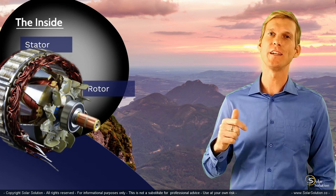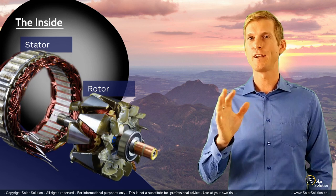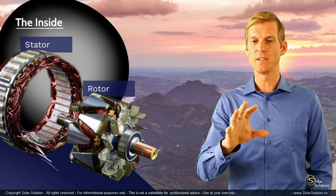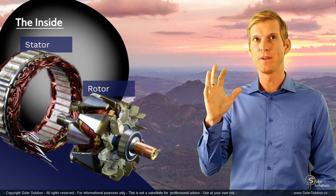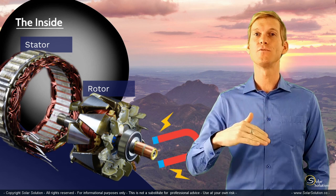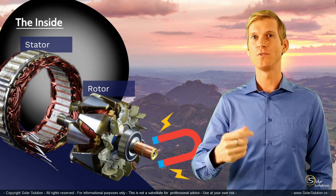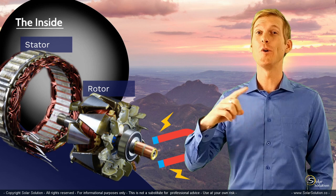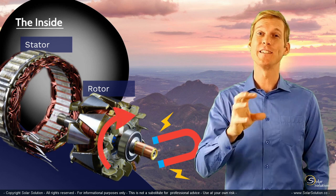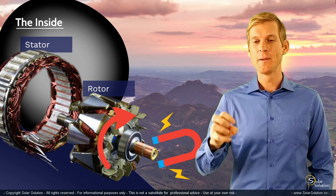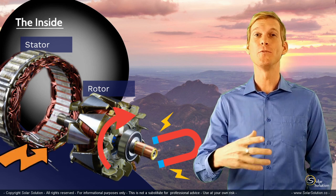Now let's pull the rotor out of the stator so we can have a closer look at it. It depends on which kind of alternator we're looking at exactly, but the basics are always the same. You're applying an electric force to the rotor, and as a result you're creating a magnetic field around the rotor. Then as you start to rotate the rotor with its magnetic field inside of the stationary stator, the stator will start to produce an electric current — and you're making electricity.